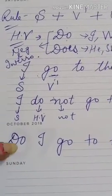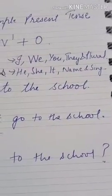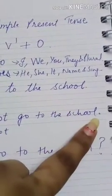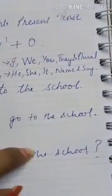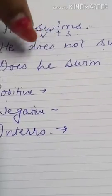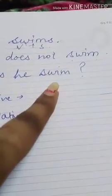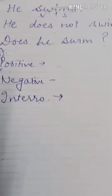In interrogative sentences, the helping verb comes first, then subject, then the main verb — and you must put a question mark. Students commonly make two mistakes: first, not putting punctuation — use a full stop for positive and negative sentences, and a question mark for interrogative. Second, adding 's' to the verb in negative or interrogative sentences when using 'does not' or 'does'. Please don't do that. Show me your homework — I'll be waiting. Thank you, students.